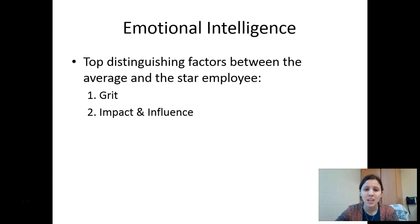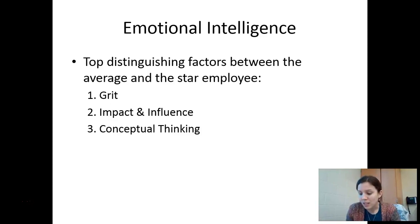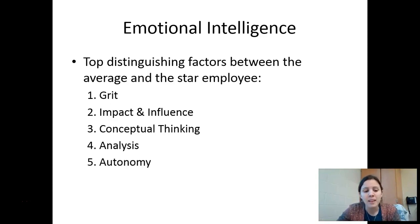The second thing was impact and influence — can you impact and influence other people? Are you a leader? You can have a high IQ but work terribly with people, and they don't want that. Third was conceptual thinking — can you recognize patterns and make a difference in the current pattern of things? Number four was their level of analysis — can you anticipate obstacles and plan ahead? And fifth was autonomy — can you work by yourself, or do you always have to be told what to do?